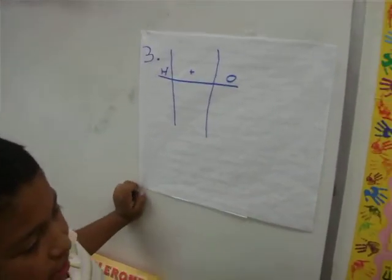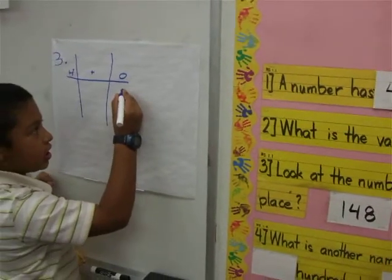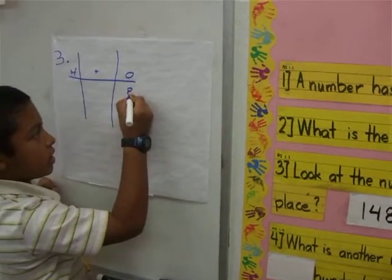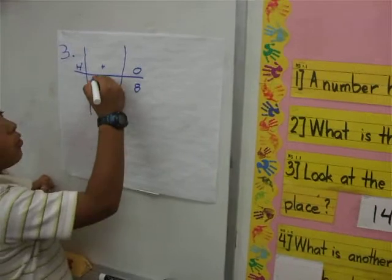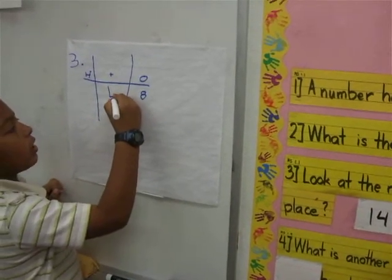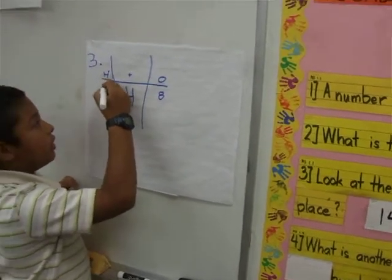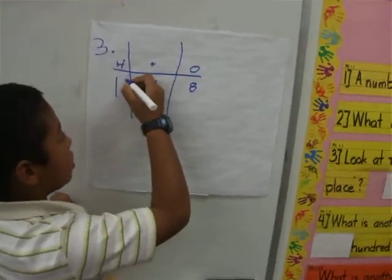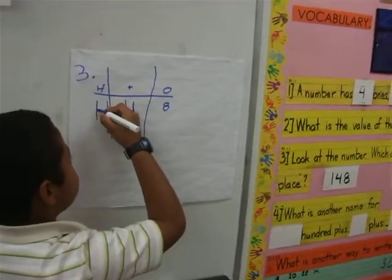The 8 goes in the 1's place. The 4 goes in the 10's place. And the 1 goes in the 100's place.